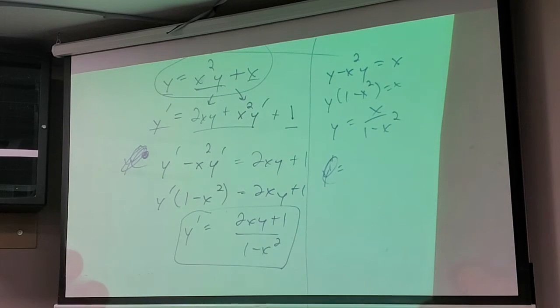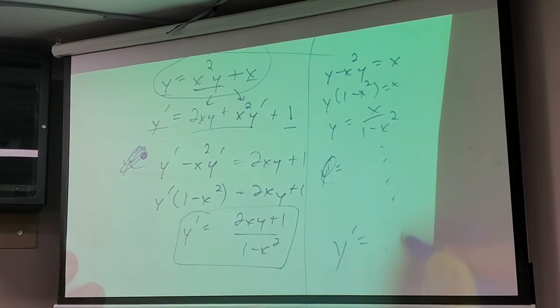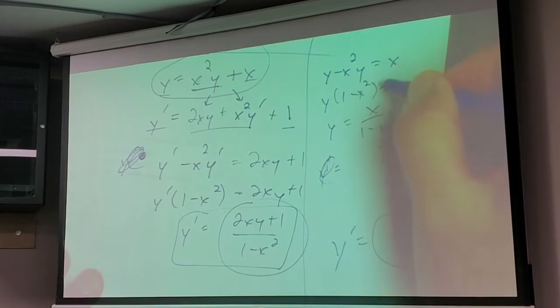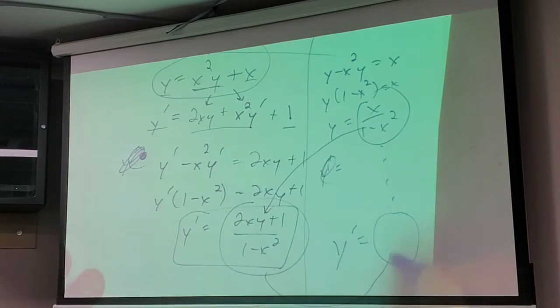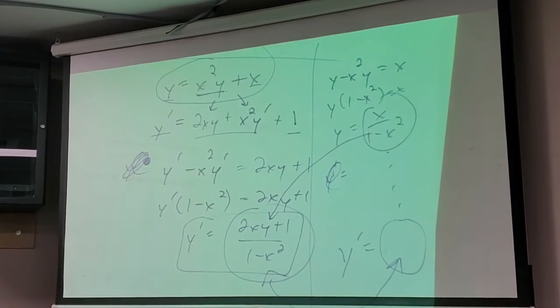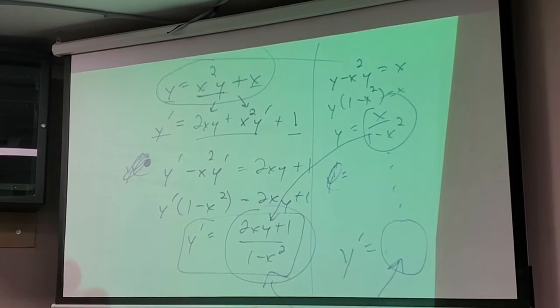Y prime shouldn't depend on which way I did it — that wouldn't make any sense. The slope can't change based on how you look at it. If I plug the explicit expression for y into the implicit y prime formula, they will simplify to the same thing. They have to.